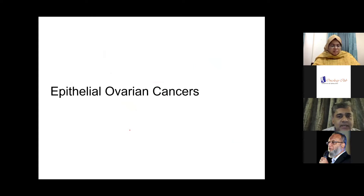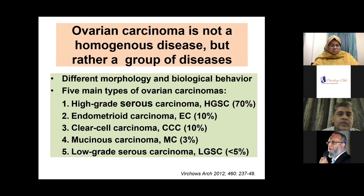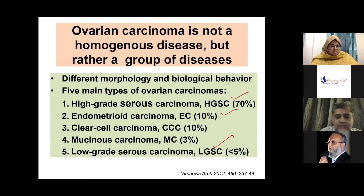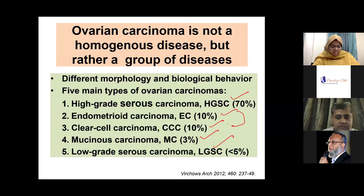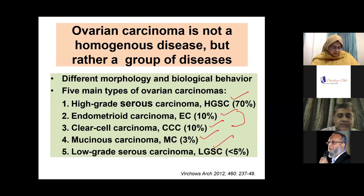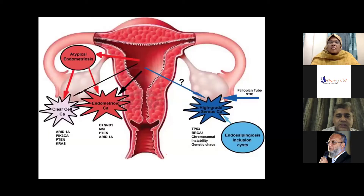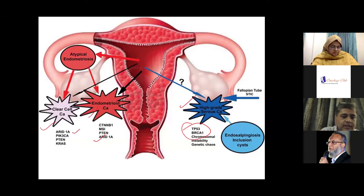Coming to epithelial ovarian cancers and the use of immunohistochemistry: ovarian cancer is not a homogenous disease. When we refer to 'ovarian carcinoma,' it doesn't have meaning unless we distinguish between high-grade serous, endometrioid, low-grade serous, clear-cell, and mucinous. All present in different age groups and backgrounds — endometrioid and clear-cell come in a background of long-standing endometriosis; many BRCA patients develop high-grade serous. High-grade serous cancer carries TP53 and BRCA mutations, whereas endometrioid and clear-cell are ARID1A-driven tumors.